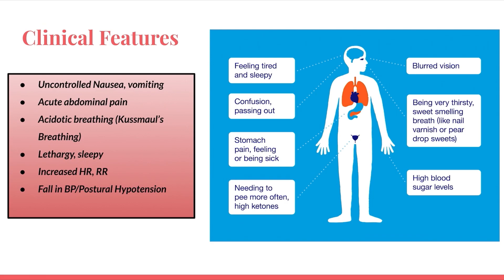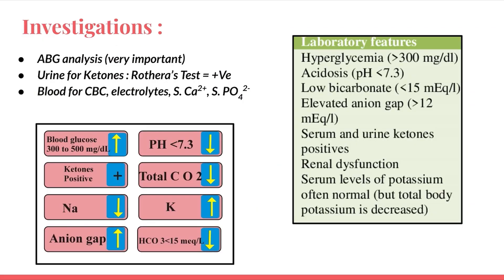In investigations, ABG analysis is very important — it is always important to obtain a baseline pH and electrolyte level so that management can be decided accordingly. Other tests include urine for ketones by the Rothera's method, CBC, electrolyte levels, serum calcium, and serum phosphate.